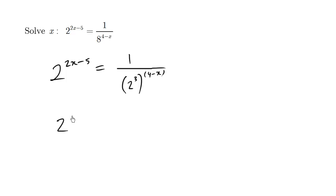So what we get is 2 to the 2x minus 5 equals 1 over 2 to the 3 times 4 is 12, 3 times negative x is negative 3x.